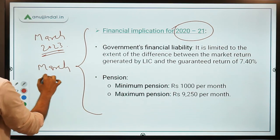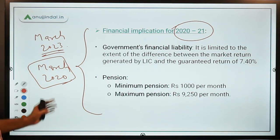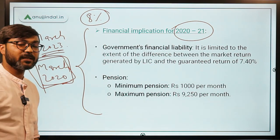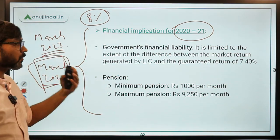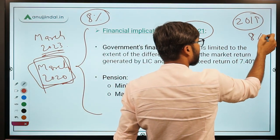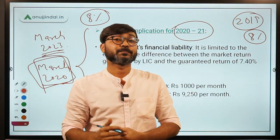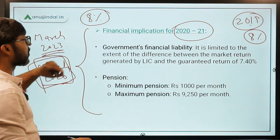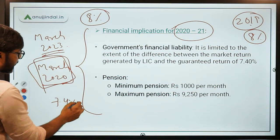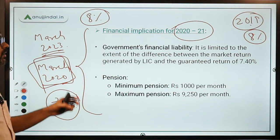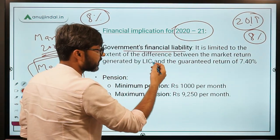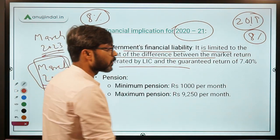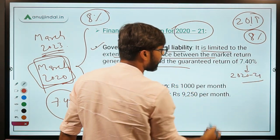The scheme was launched up to March 2020 but was recently extended up to March 2023. Initially, the rate of interest was 8 percent. So if a person bought this policy in 2019, they would receive an 8 percent rate of return from 2019 to 2029. But in 2020-21, the government reduced the rate of interest to 7.4 percent, in line with the Senior Citizen Savings Scheme. The government's financial liability is limited to the difference between the market return generated by LIC and the guaranteed return of 7.4 percent.